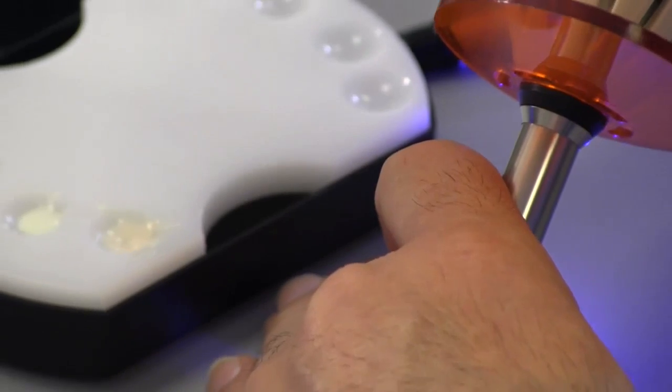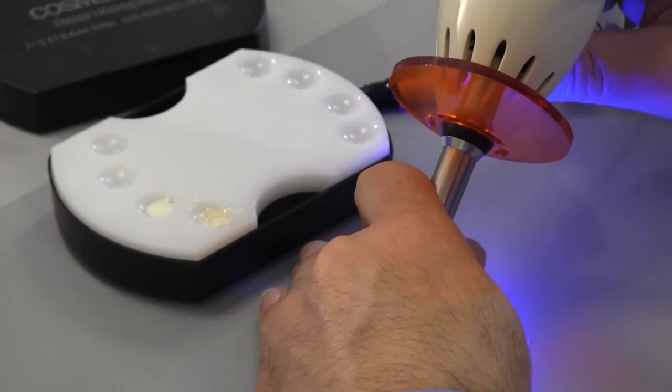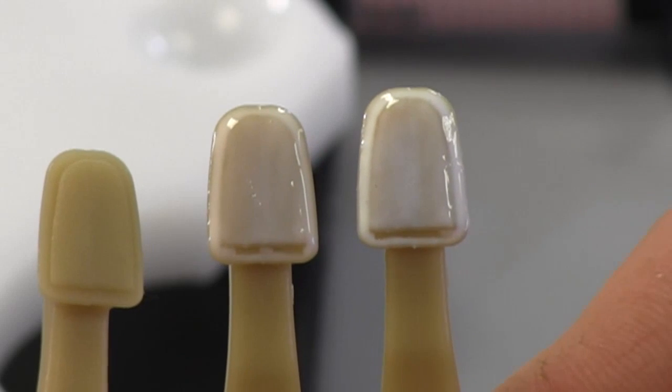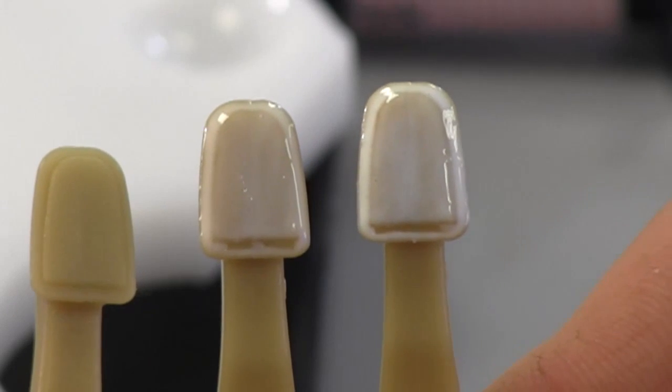We'll cure this for 10 seconds. And then we'll show you the difference between the White Opaque and the Pink Opaque. If you notice on the far left, we started with our C4 shade tab. Then in the middle we placed our Pink Opaque.